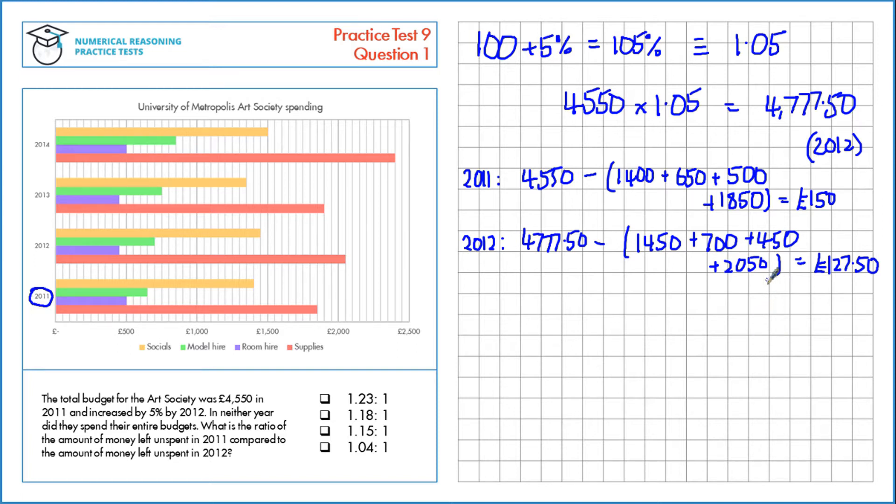Now let's form the ratio and simplify. So we've got 2011 to 2012, and that's £150 to £127.50.